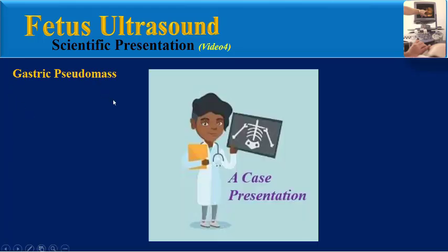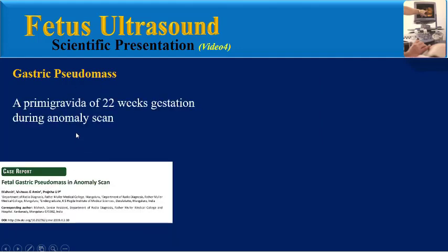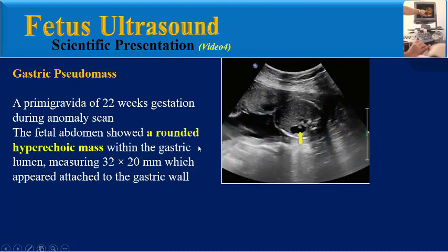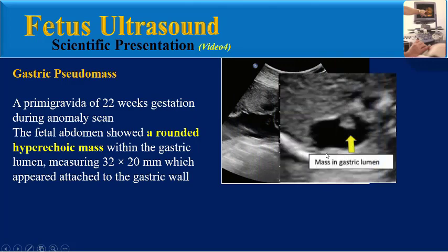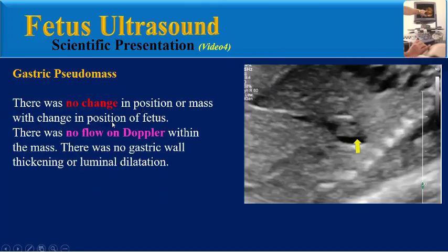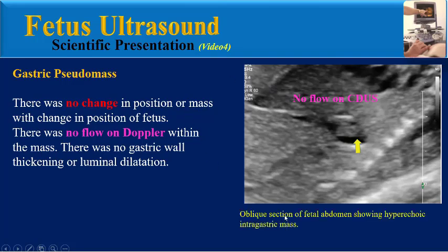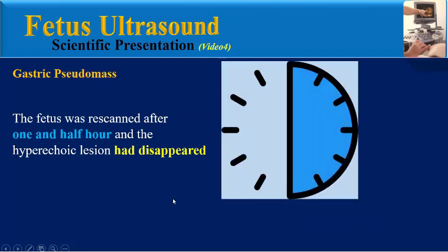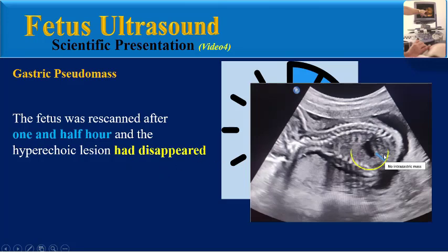We will review two teaching cases together. The first case: a primigravida of 22 weeks gestation during an anomaly scan. The fetal abdomen showed a rounded hyperechoic mass within the gastric lumen which appeared attached to the gastric wall. There was no change in position of the mass with change in position of the fetus. There was no flow on color Doppler ultrasound within the mass, and there was no gastric wall thickening or luminal dilatation. As we can see in this oblique section of fetal abdomen, a hyperechoic intragastric mass without any change in position. The fetus was re-scanned after one and a half hours and the hyperechoic lesion had disappeared.